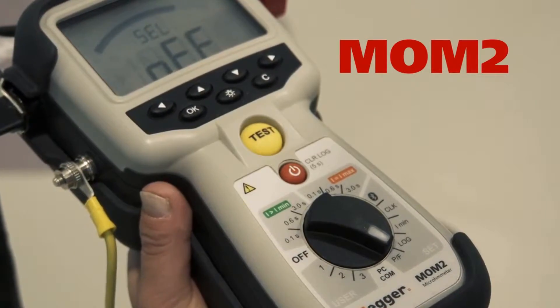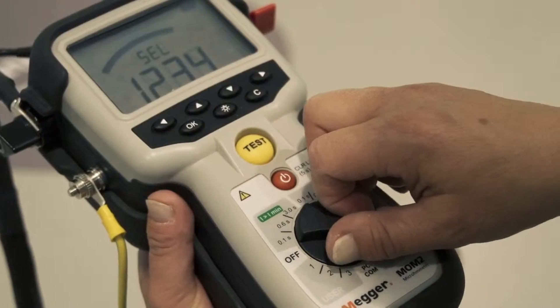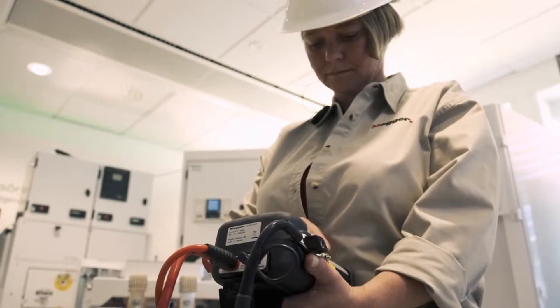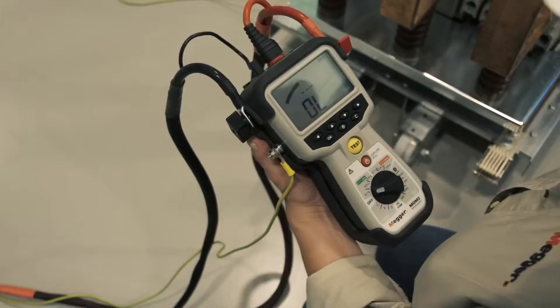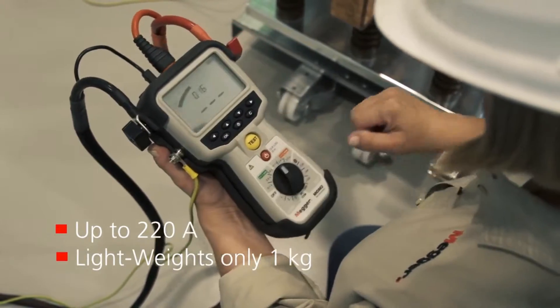Mom2 is a micro ohm meter that revolutionized the high current measurement field. Using patented super cap technology, Mom2 measures contact resistance by pushing more than 200 amps out of an instrument in the size and shape of a modern multimeter.